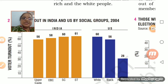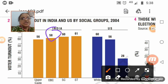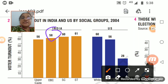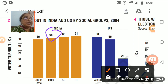56% of upper caste voters go for voting, 58% OBC, 60% scheduled caste, and 61% scheduled tribe. When these kinds of voting trends are followed and these groups are going for voting, obviously there are a lot of changes in the country.